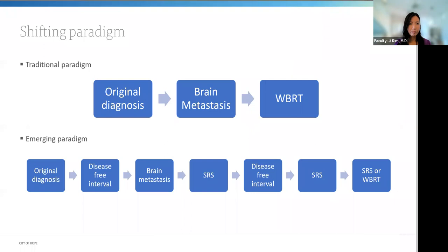There is a definite paradigm shift in the treatment of brain metastasis. Traditionally all were treated with whole brain radiation, but because of neurocognitive decline with whole brain radiation and the growing evidence of SRS being effective even for multiple brain metastases, there is an emerging paradigm where SRS is used repeatedly, saving whole brain radiation until it is truly needed.